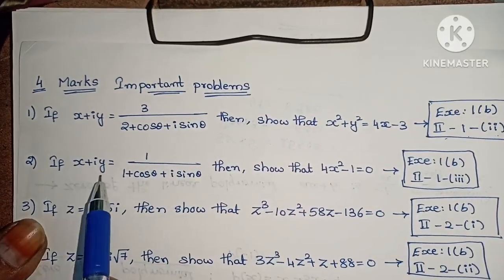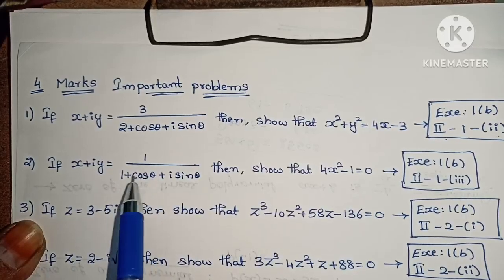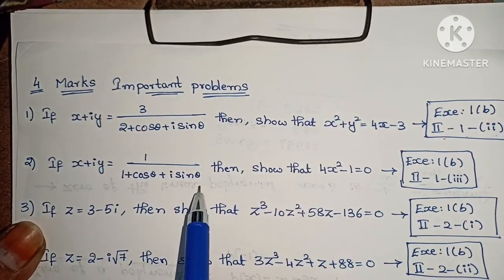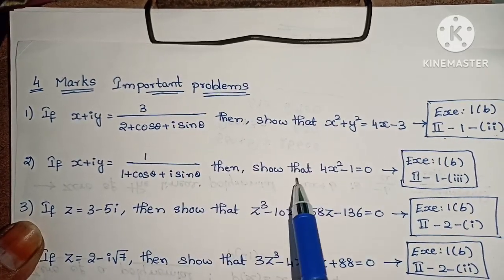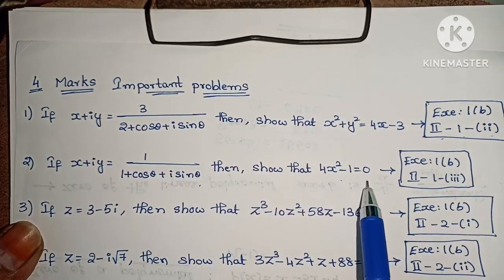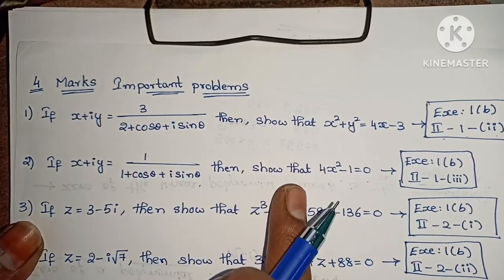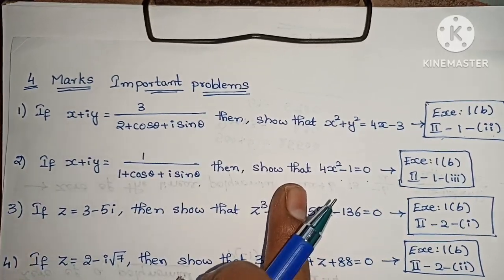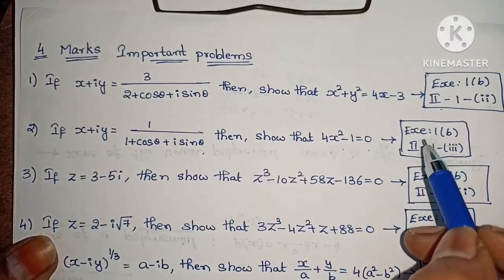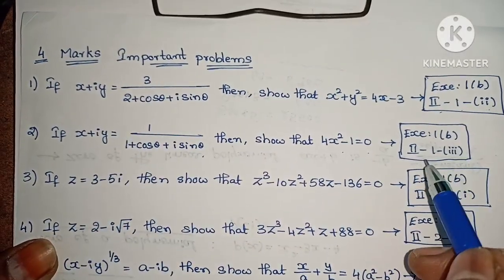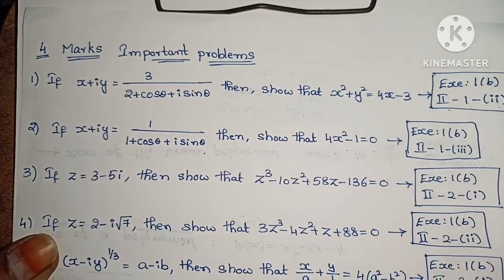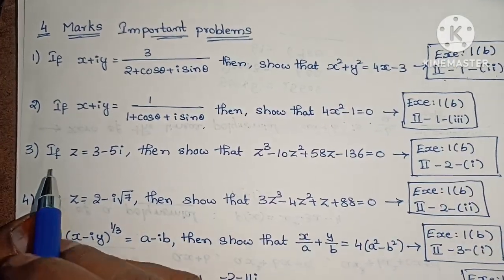If x plus iy equals 1 / (1 + cos theta + i sin theta), then show that 4x squared minus 1 equals 0. This problem repeats in many question papers, so it is very important. Exercise 1 below, second roman, first, third one.